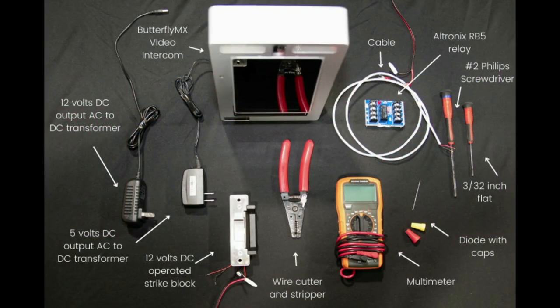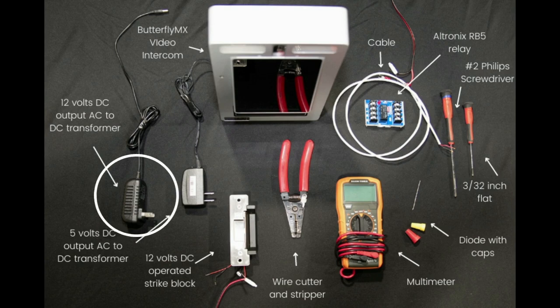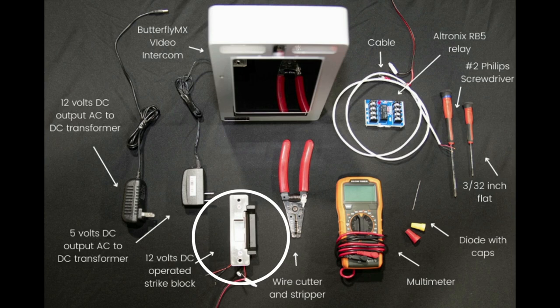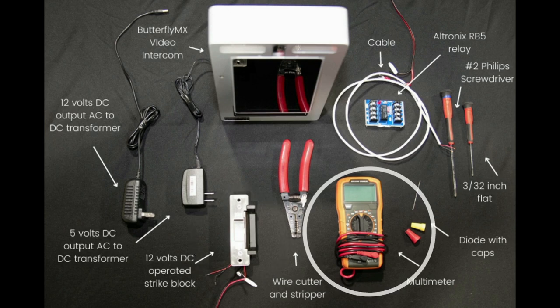For this project we will need a ButterflyMX video intercom, 12 volt DC power supply to power the RB5 isolation relay, 12 volt DC power supply to power the DC strike, 12 volt DC operated strike lock. In this case a Seiko alarm SD994A Alpha 1 Alpha Quebec, previously wired to combine their two positive and two negative wires into two, one positive and one negative.